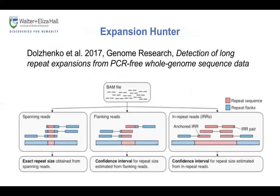There are four different tools recently developed for detecting repeat expansions. Expansion Hunter, developed by Igor Dolzhenko and others at Illumina, identifies anchor reads and then, depending on whether reads span, flank, or are in-repeat reads — if reads span the STR, it attempts to determine the exact repeat size, similar to existing STR genotyping tools. However, for flanking or in-repeat reads, it estimates the repeat size and determines a confidence interval.